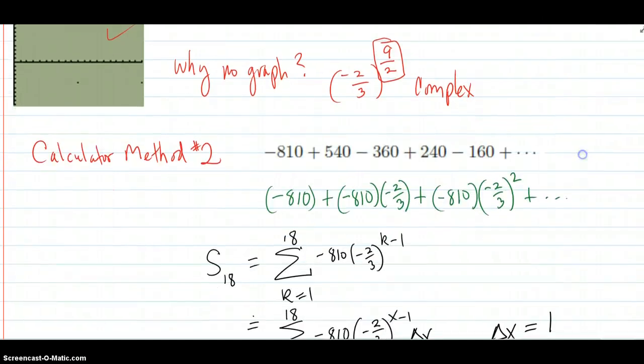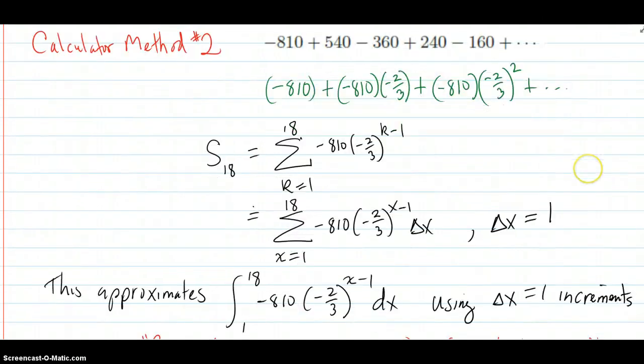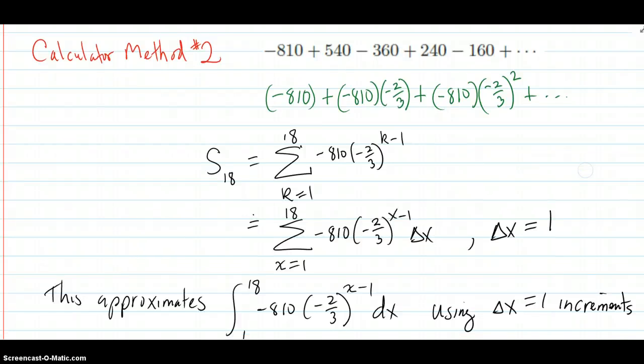Okay. Here's calculator method number two. I rewrote the original series here just so we see what, you know, that we have that. And just going over creating that general term inside the sum again. You know, it was negative 2 thirds hitting on the negative 810 each time and higher powers. So this was the term, the form of each of those numbers in the sum.